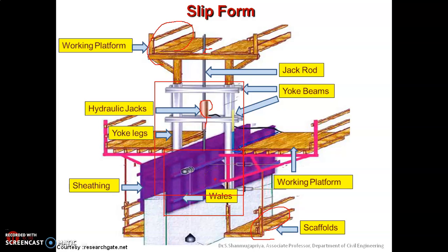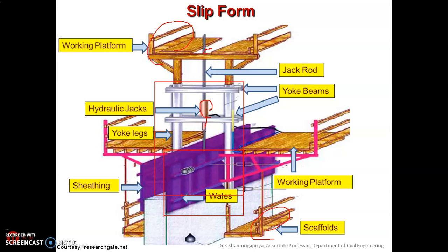The sliding speed of the formwork depends primarily on the setting time of the concrete, the ambient temperature, and the type of cement used. The form panels move semi-continuously with respect to the concrete surface, and when exposed, the concrete has sufficient strength to resist its own weight and lateral pressure caused by wind — which is why slip form is compared to an extrusion process.